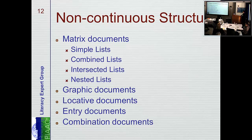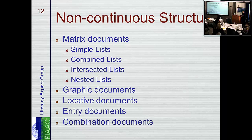This is not overly elaborated from prior forms, a little bit more generalized. So we have all kinds of non-continuous structures: graphic documents, locative documents — I like that term, it's sort of maps plus — entry documents, and combination documents. The world wide web and the internet combine all these elements all the time. It's rarer and rarer that you see just one type in front of you.